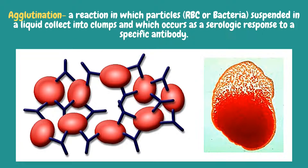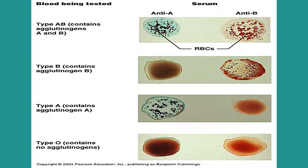Agglutination is a reaction in which particles — either red blood cells or bacteria — suspended in a liquid collect into clumps, which occurs as a serologic response to a specific antibody. The test to determine your blood group is called ABO typing. Your blood sample is mixed with antibodies against type A and B blood, then the sample is checked to see whether or not the blood cells stick together. If blood cells stick together, or agglutinate, it means that the blood reacted with one of the antibodies.